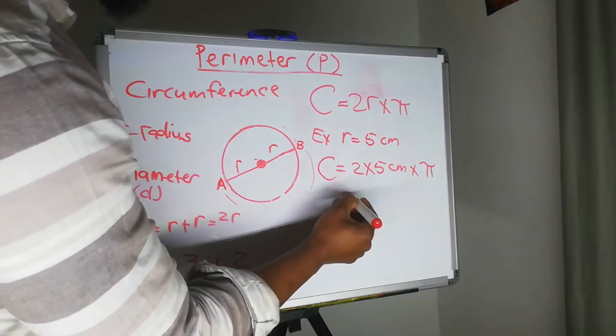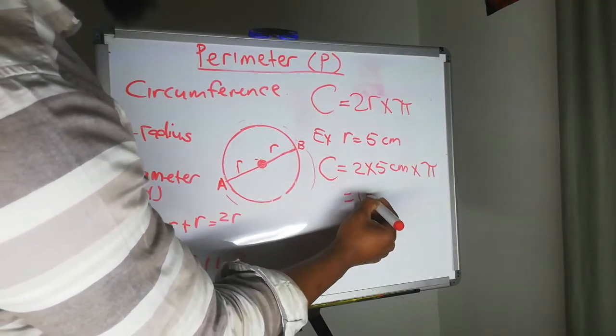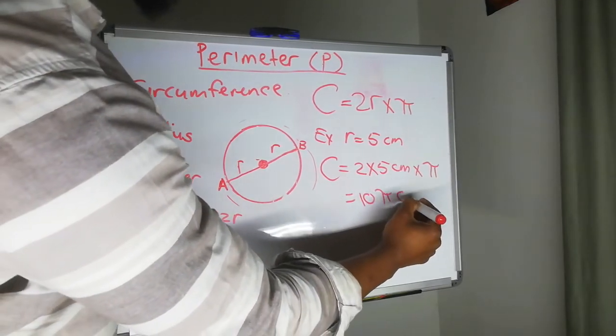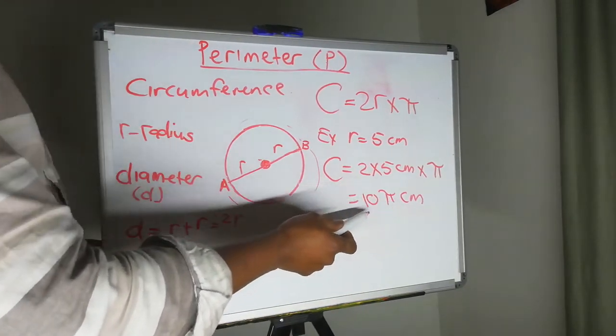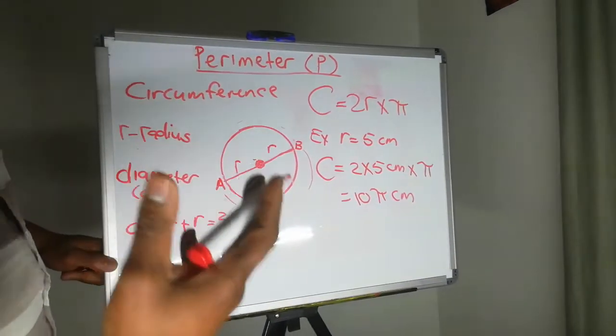which is going to give us 10 pi centimeters. Now in mathematical literacy, you can use a calculator.